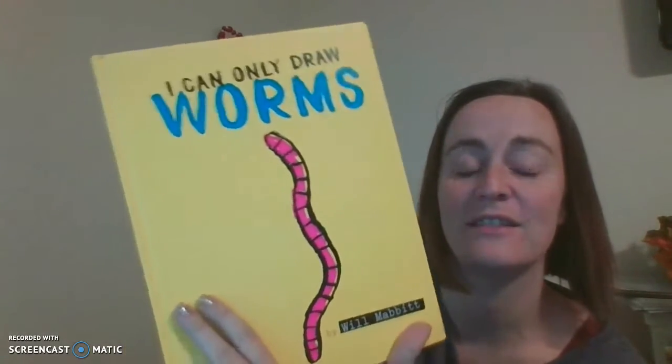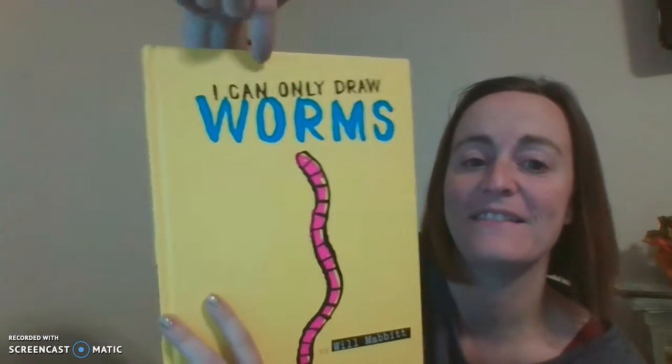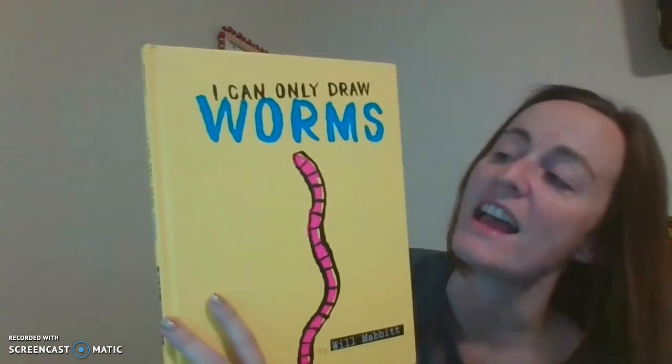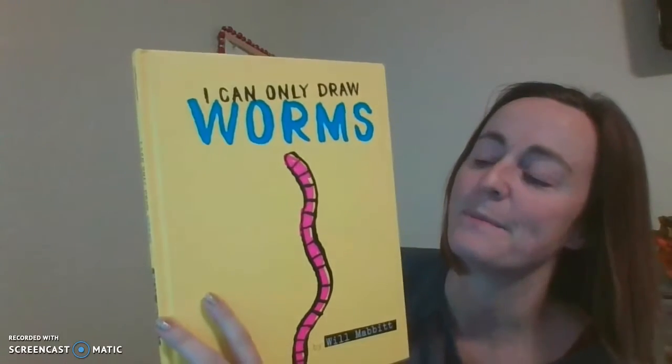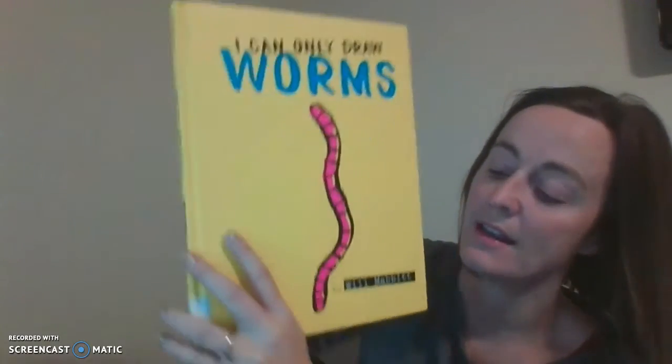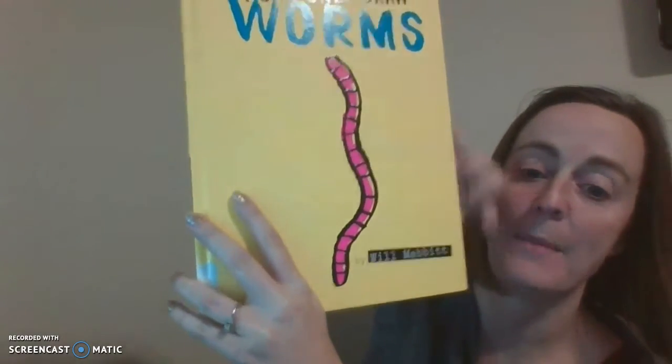Can you see the title? That's right, that's the title right there. And it says, I can only draw worms, but it's really a book about counting. And it's by Will Mabbitt.